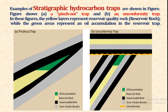Here are the stratigraphic traps shown in the figure. The first is the pinch-out trap and the second is the unconformity trap. In these figures, the yellow layers represent reservoir rock while the green areas represent oil accumulation in the reservoir traps. This is the oil accumulation, this is the reservoir rock, and these are the impermeable trap rocks along with the overburden. In the unconformity trap, strata are inclined and further horizontal strata are present above.